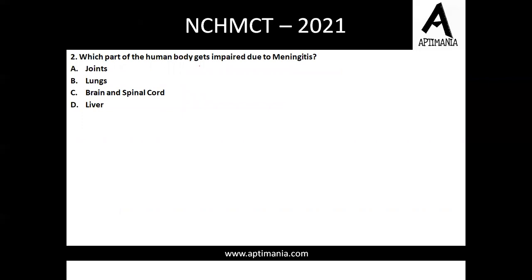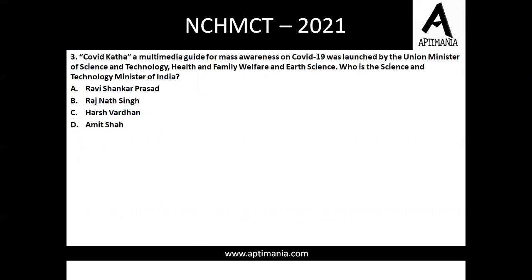Question number two: which part of the human body gets impaired due to a particular disease? The correct answer is option C, that is the brain and spinal cord. Question three: Covid Katha, a multimedia guide for mass awareness on COVID-19, was launched by the Union Minister of Science and Technology, Health and Family Welfare, and Earth Science.